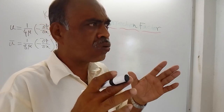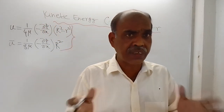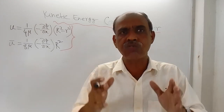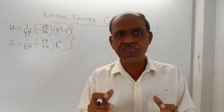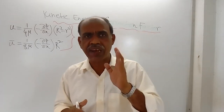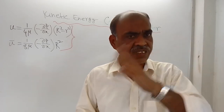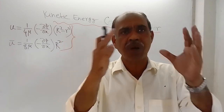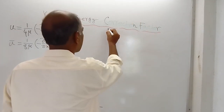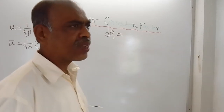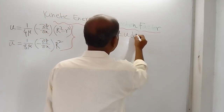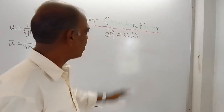Since we are calculating kinetic energy, the mathematical definition is KE = ½mv². Here mass is obtained from the discharge q, the volume flow rate. Multiplying density by volume flow rate gives mass flow rate. For the elementary area, the discharge is dq, and dq equals u·dA, where dA is the elementary area and u is the actual velocity.